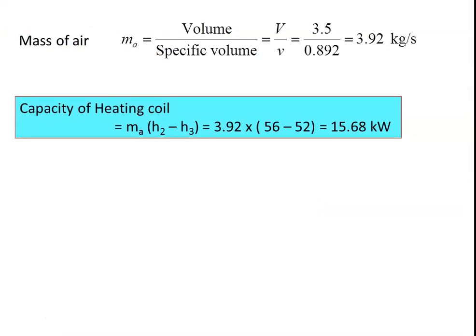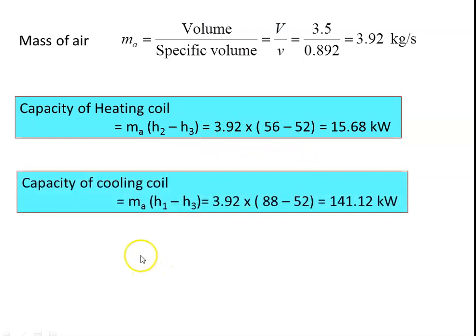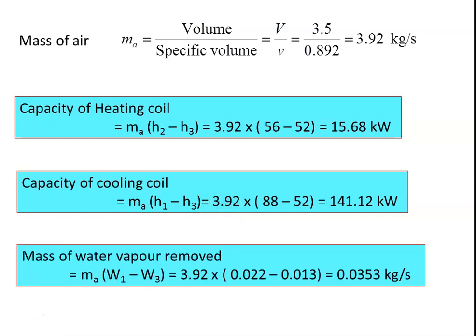Mass of air = volume / specific volume = 3.5 / 0.892 = 3.92 kg/s. Capacity of heating coil = ma × (h2 − h3) = 3.92 × (56 − 52) = 15.68 kilowatts. Capacity of cooling coil = ma × (h1 − h3) = 3.92 × (88 − 52) = 141.12 kilowatts. Mass of water vapor removed = ma × (w1 − w3) = 3.92 × (0.022 − 0.013) = 0.0353 kg/s.